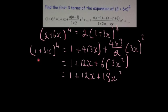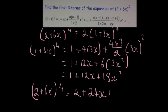But obviously because that's the expansion for 1 plus 3x all to the power of 4, we need to times it by the 2. So we're going to times this all by 2, so then our answer would be 2 plus 6x to the power of 4 will equal, times it by 2, gives you 2 plus 24x plus 36x squared.